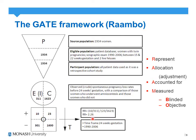This is where we go back to our exposure and comparison group and identify what the measures were and how they were measured from a blinding and objective perspective. Finally, from this we can calculate our relative risk: 10 out of 311 in the exposed group divided by 23 out of 1623 in the comparison group, giving us a relative risk of 2.26. Lastly, you can incorporate a time perspective into the framework if you wish.